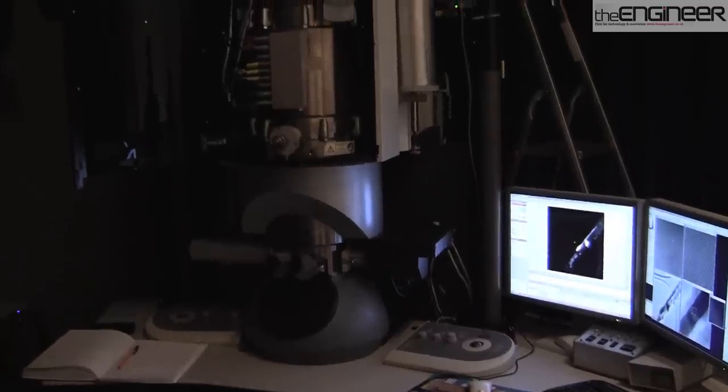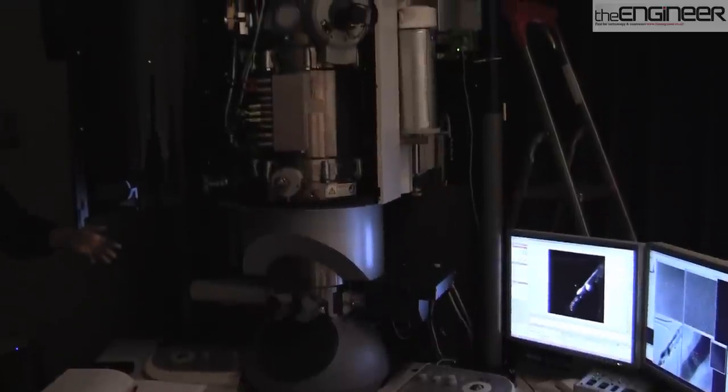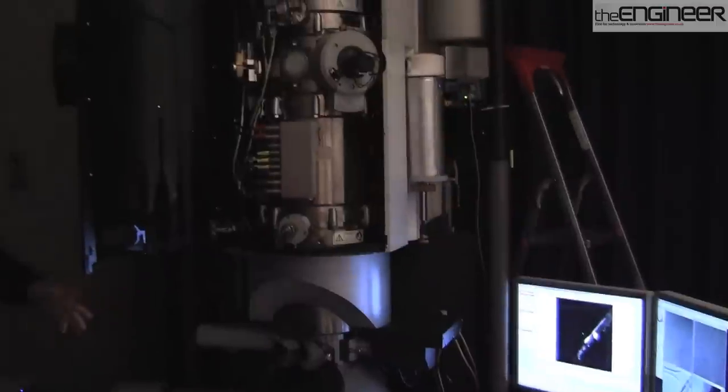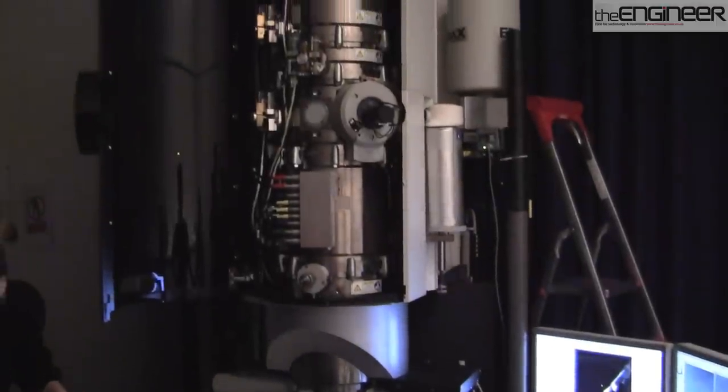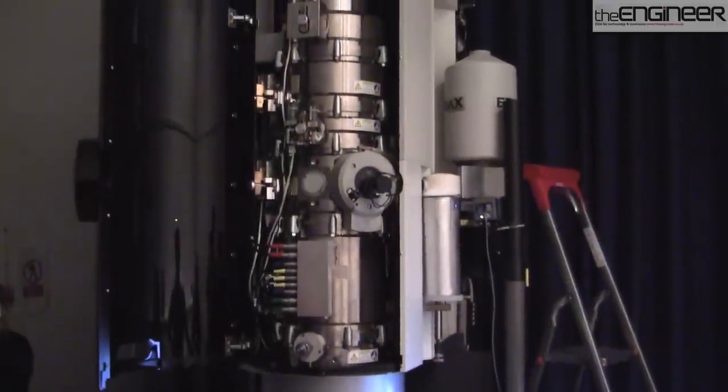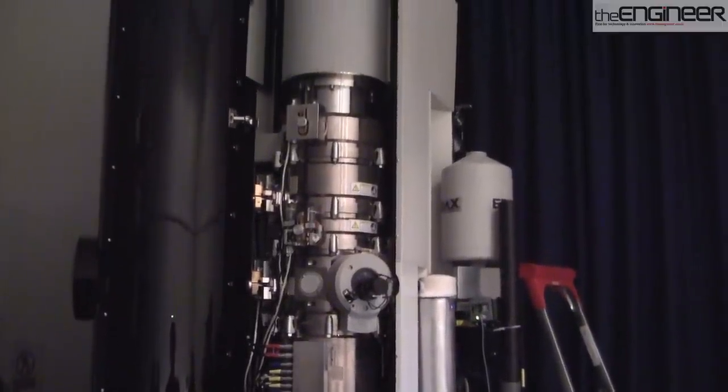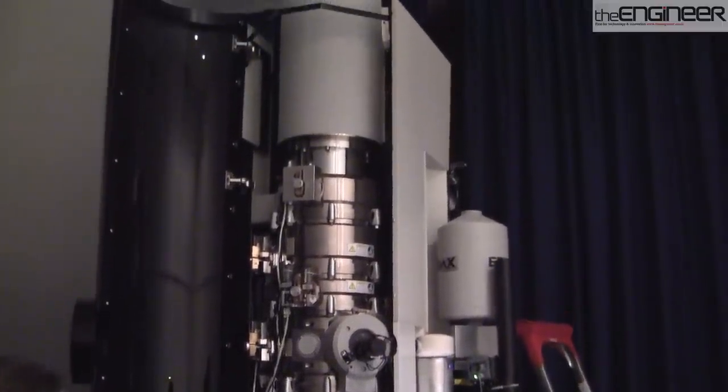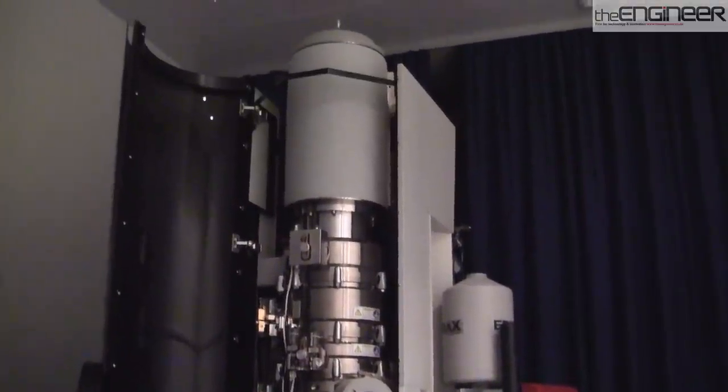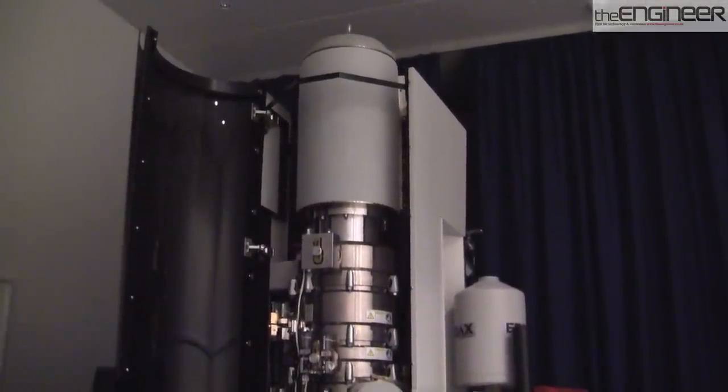When you're studying things on the nanoscale, you need machines to enable you to see them, and that's the first place that engineers come in. This is a Titan electron microscope that allows scientists to study materials right down to the atomic level. The London Centre for Nanotechnology has several very rare instruments, and even some that are unique in the world.